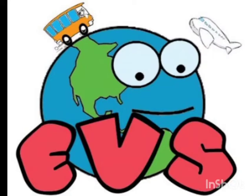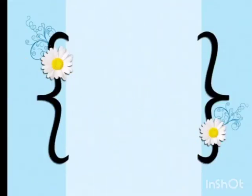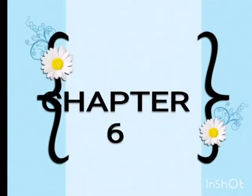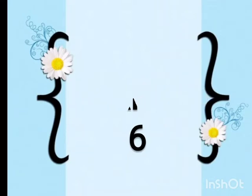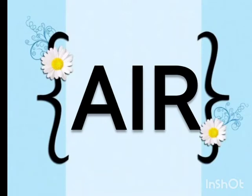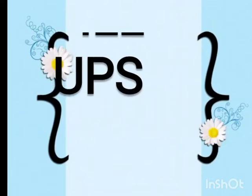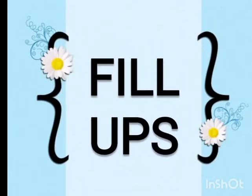Good morning, dear students. How are you all? I hope you all are doing fine. Today we are going to do EVS — Chapter Number Six, and the name of Chapter Number Six is 'Air Around Us.' Today we will do some fill-ups of this chapter. So students, let's start.